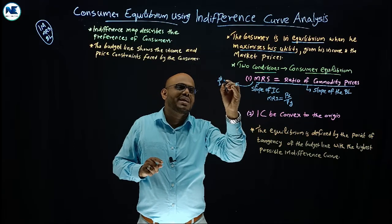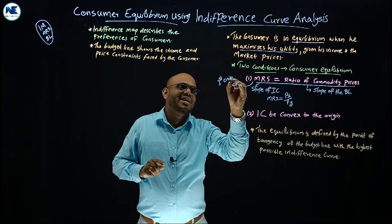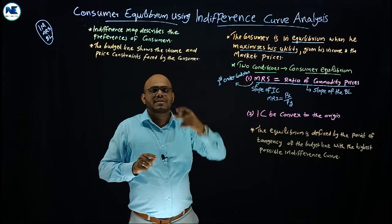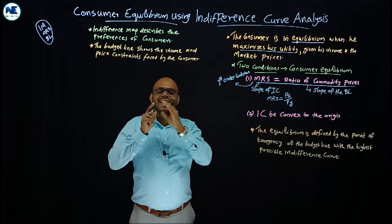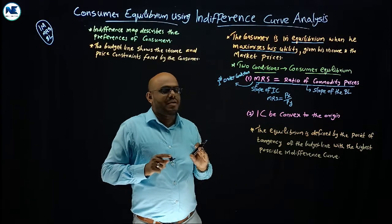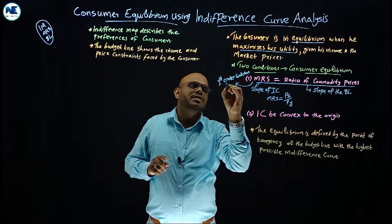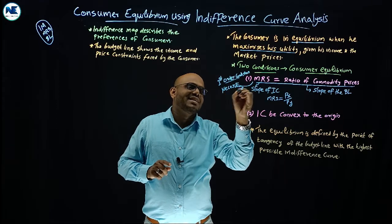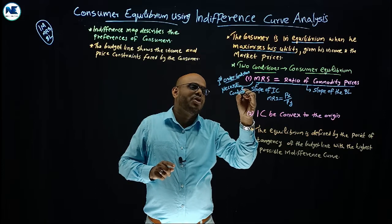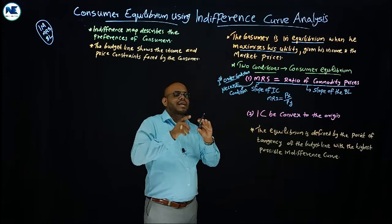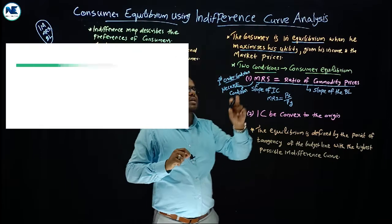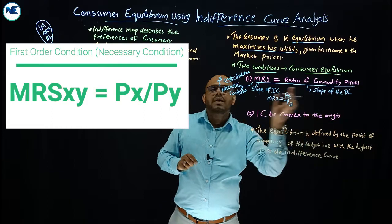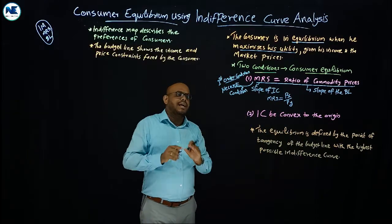This is called the first order condition, or simply the necessary condition, for consumer equilibrium. The necessary condition is that MRS — the slope of the indifference curve — is equal to the slope of the budget line.